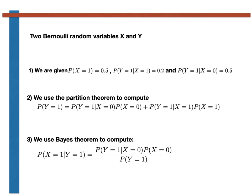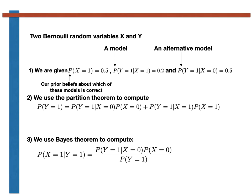Bayesian statistics supposes that what we are doing when we solve these types of problems is comparing two different models for the data that has been collected. In Bayesian statistics, the two conditional probabilities given in the statement of the problem are two models we might use for the data that has been generated. Furthermore, the prior probability given in the statement is the probability that the data has been generated from one of these two particular models. In other words, the value P(X equals 1) is a statement about our prior beliefs about which of the models is correct.